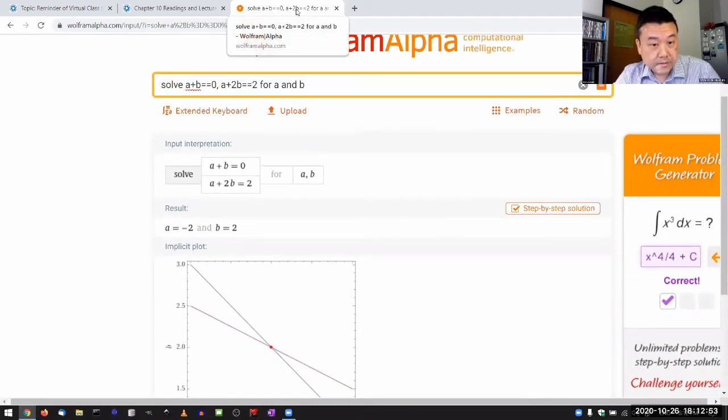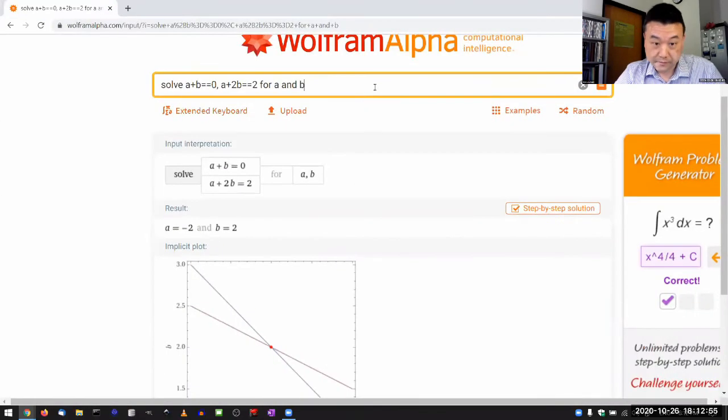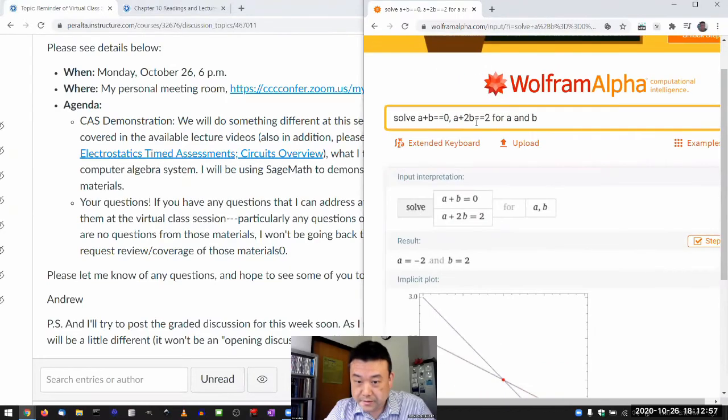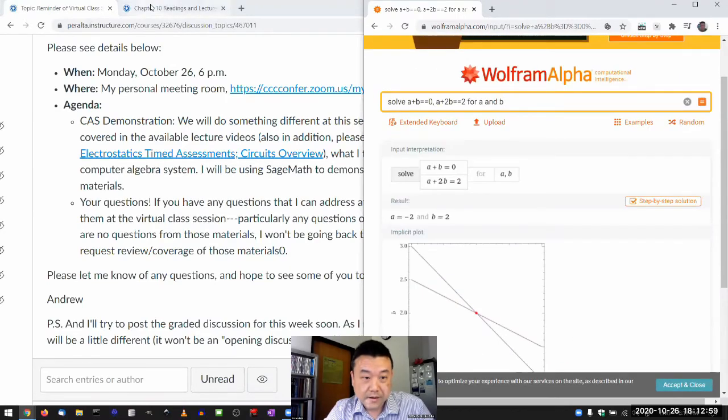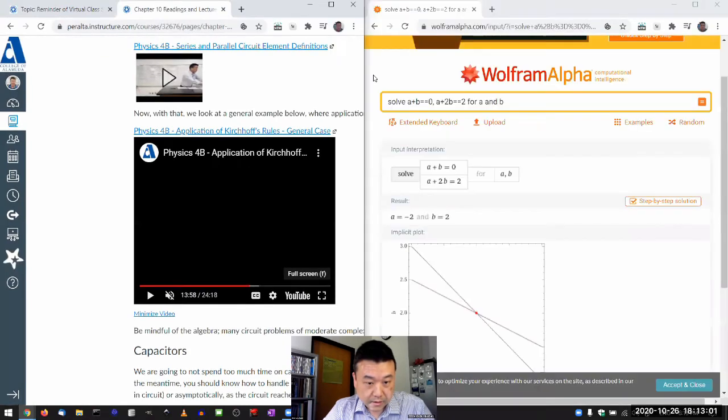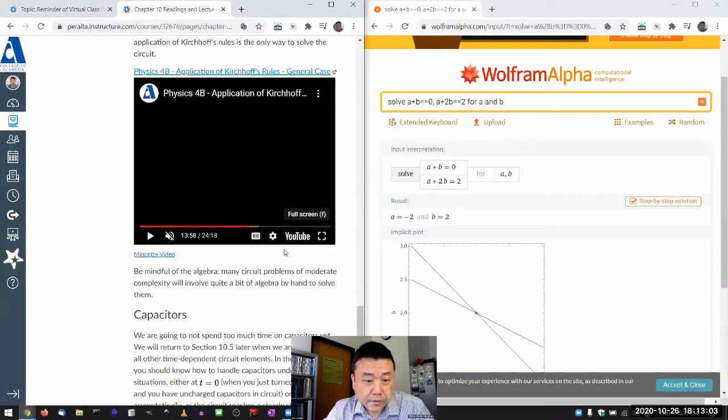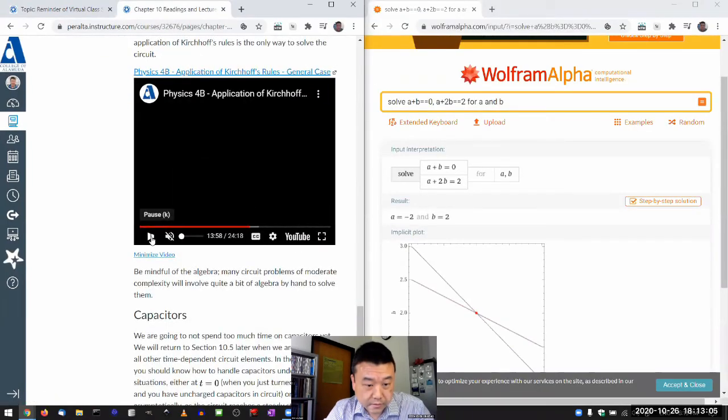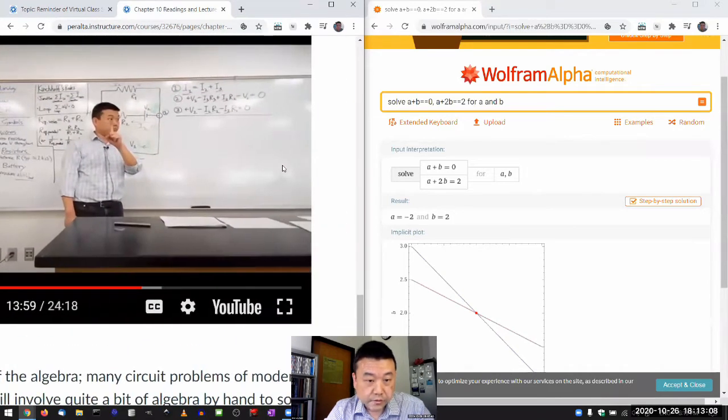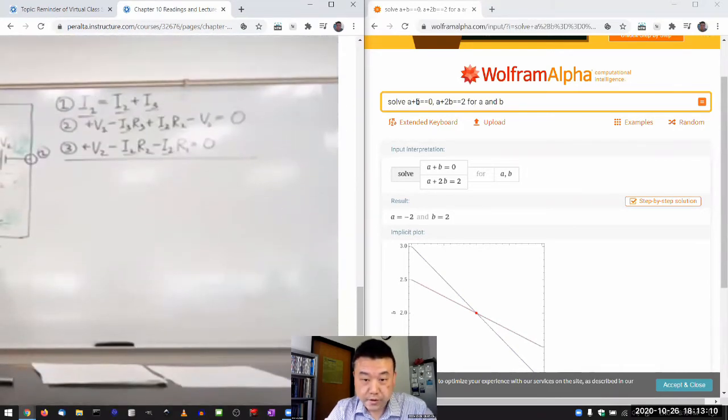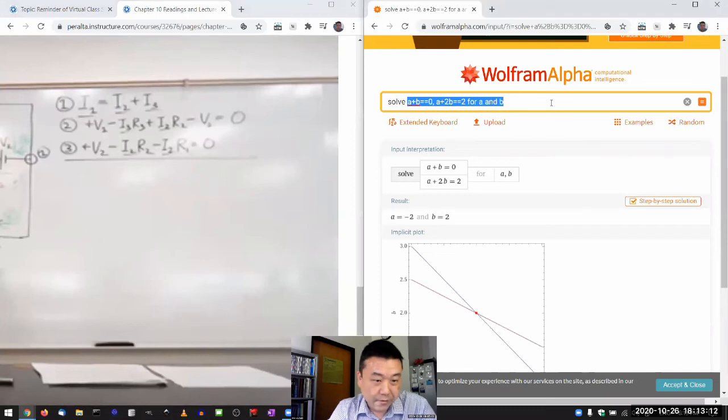And it's given me an answer. Oh, I wonder if that means it can do this. I didn't try this before this session. Let me see if we can do this. What I'm going to do is, okay, I'm going to get that equation there and see if Wolfram Alpha can do it.